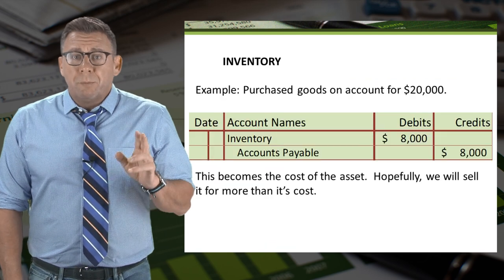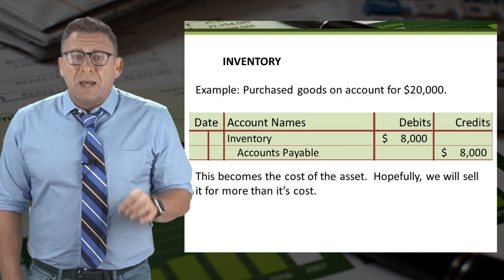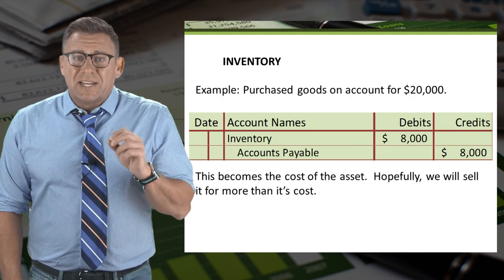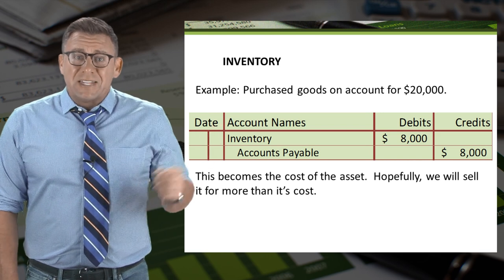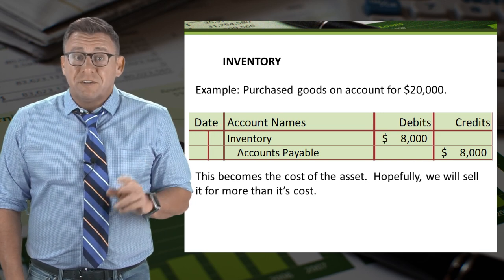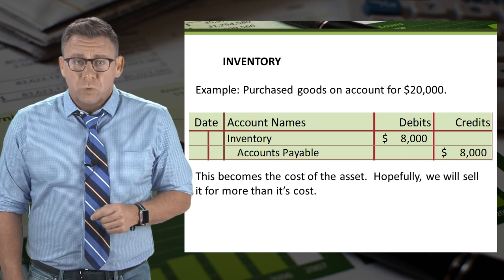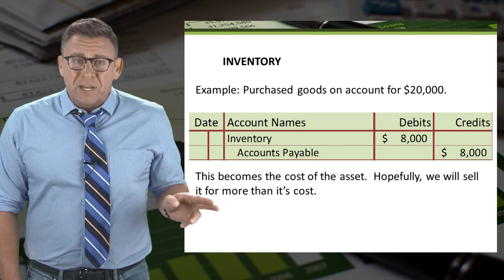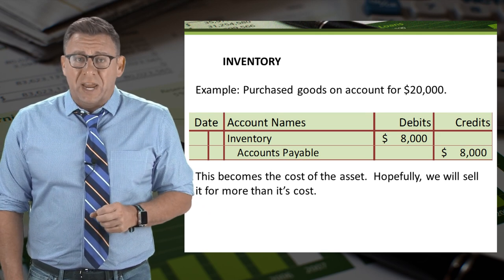When we purchase inventory, this becomes the asset's cost. In this example, we bought $8,000 of inventory to resell. We debit inventory and credit accounts payable for $8,000.